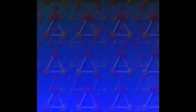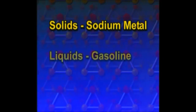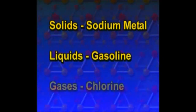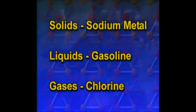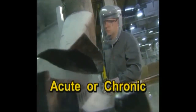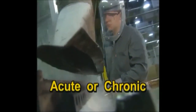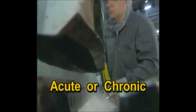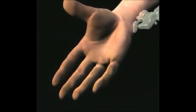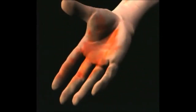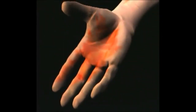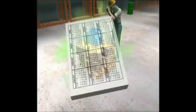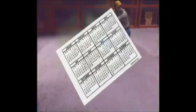Hazardous chemicals can be solids, such as sodium metal, liquids like gasoline, or gases like chlorine. The effect a chemical has on your body can be either acute or chronic, depending on the type, frequency, and length of your exposure. Acute effects usually occur rapidly as the result of short-term exposure and typically do not last a long time. Chronic effects develop over time, sometimes showing up many years after the exposure, and are usually the result of repeated or long-term exposure.